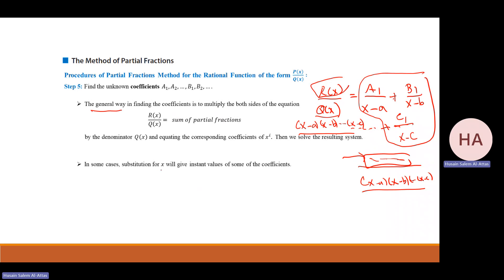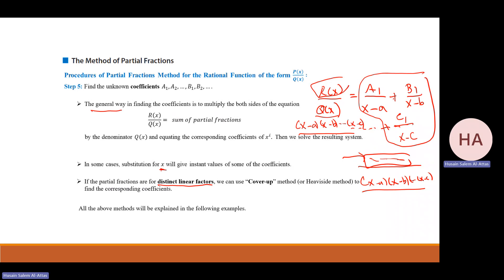Sometimes substituting a specific value of x makes the calculation easier. There is also something called the cover-up method, which is especially useful when you have distinct linear factors, to find the constants A, B, and so on more quickly.